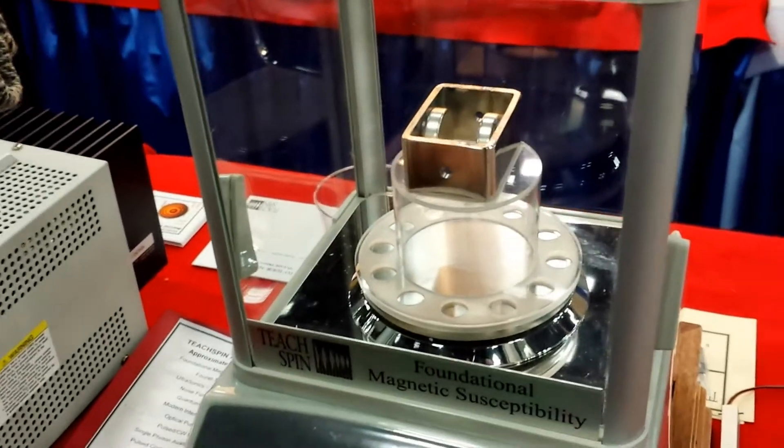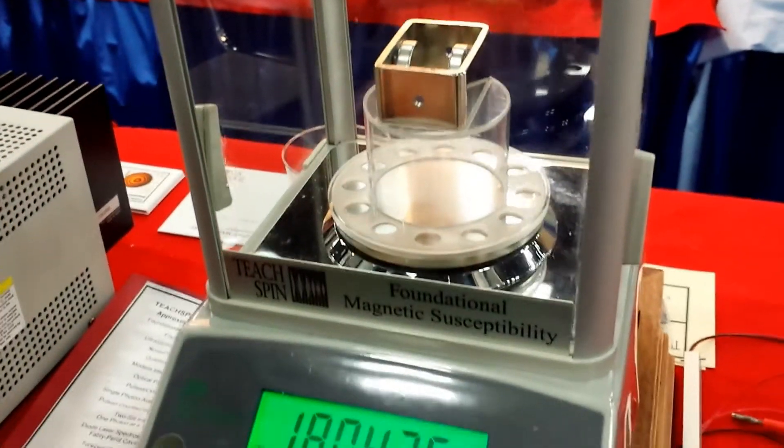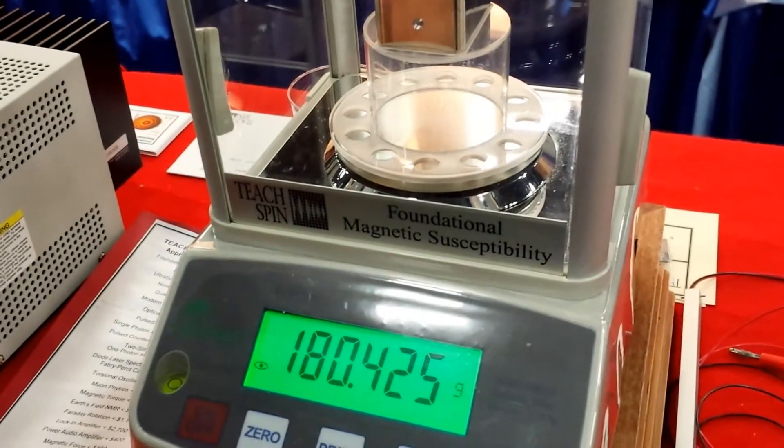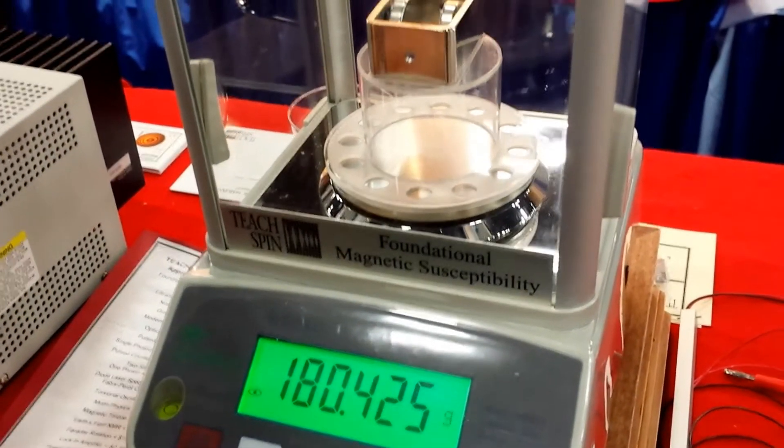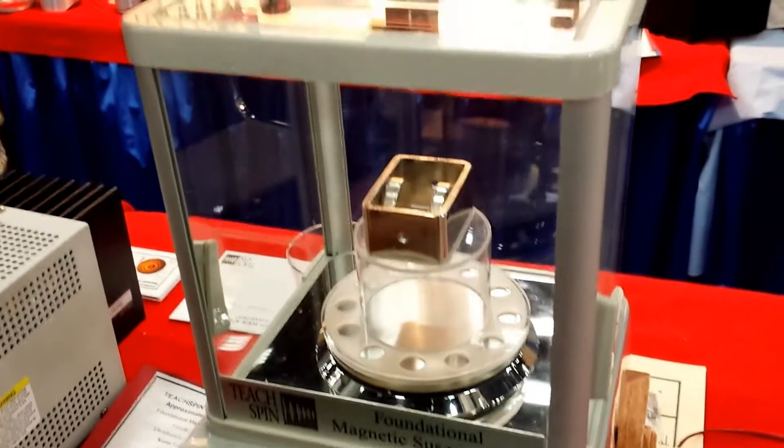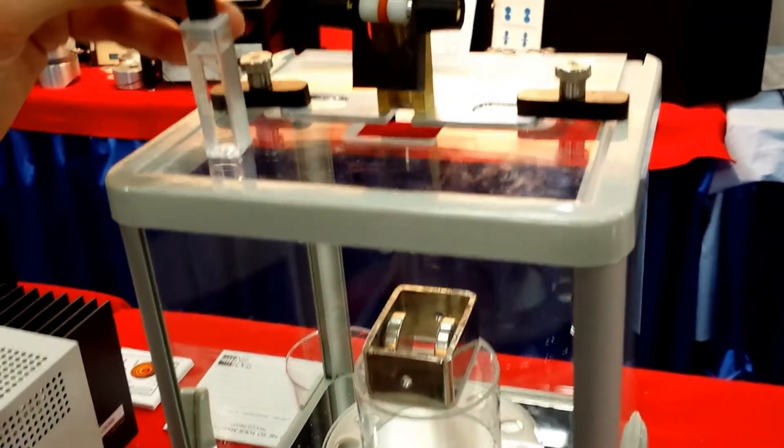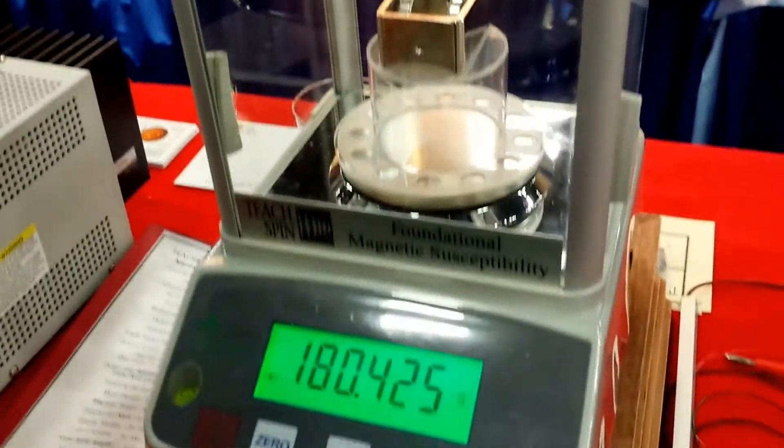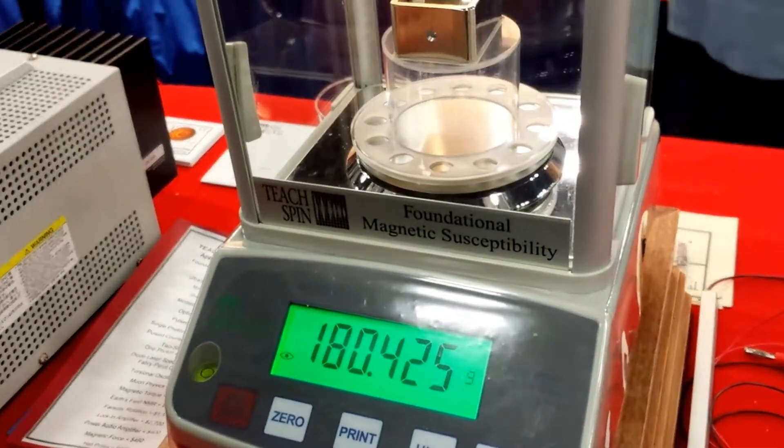Okay. Now those magnets are attached to a frame and it's sitting on top of, is this an ordinary scale? It's a jeweler scale. 200 gram capacity and one milligram resolution. And it's indicating that the mass of the magnet structure and its support is about 180 grams.